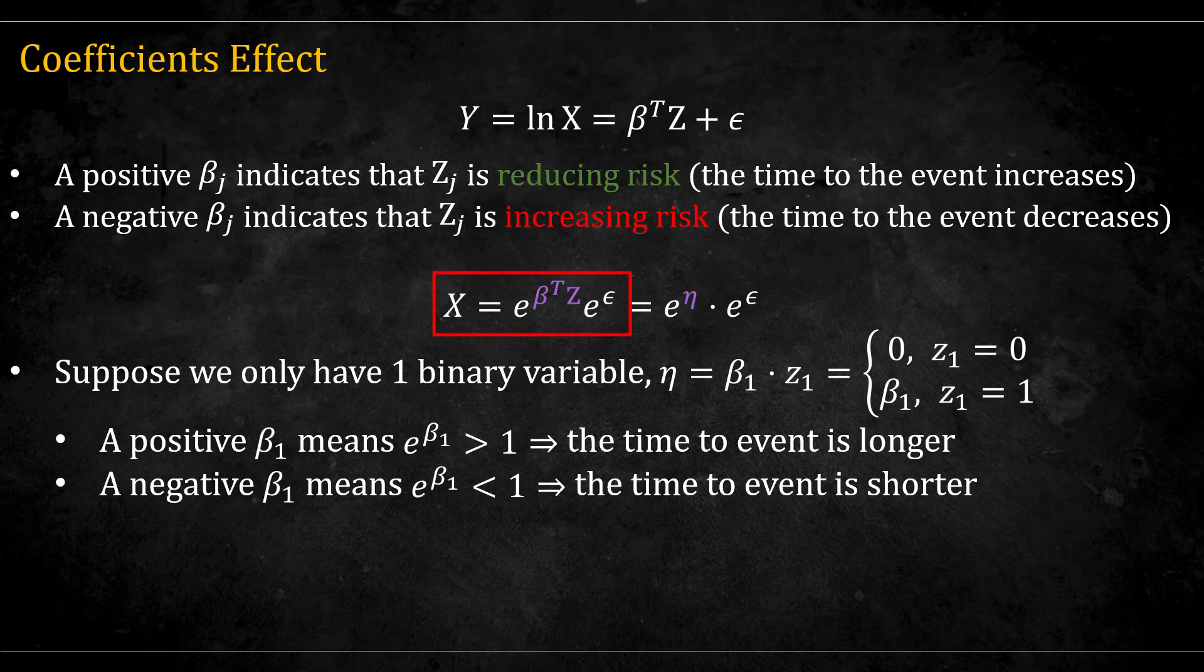If we transform back to x, we see that we get some constant, which is the exponent of the linear predictor times a stochastic part. In the simplest form, let's assume we only have one binary variable. And so the linear predictor is equal to 0 when z1 is 0, and beta 1 when z1 is 1. This means that a positive beta will make the constant bigger than 1, and so the time to event is longer. And a negative beta will make the constant smaller, a fraction, and so the time to event is shorter.